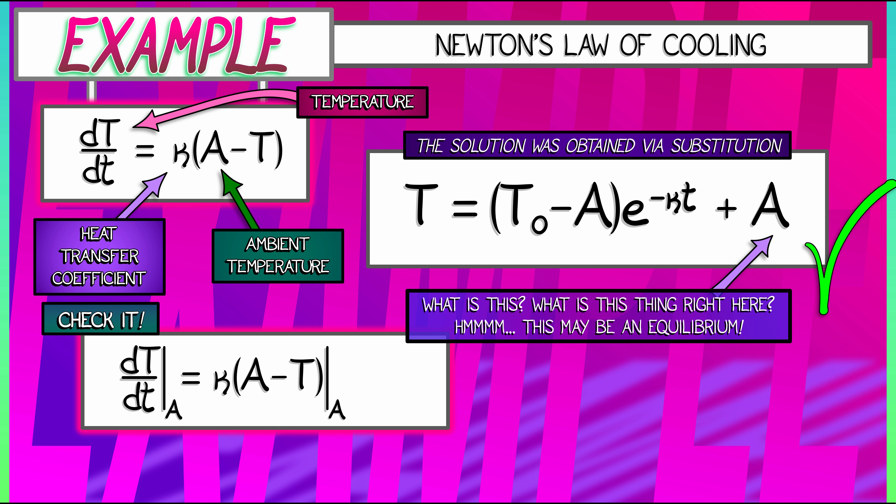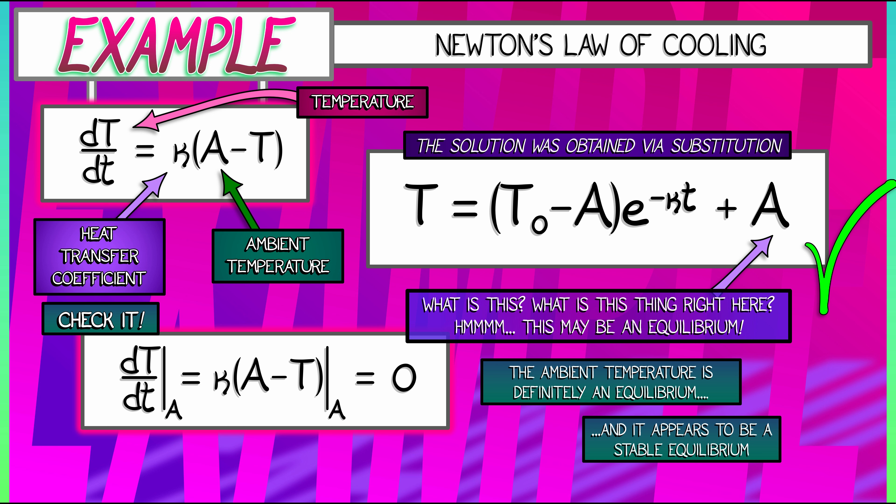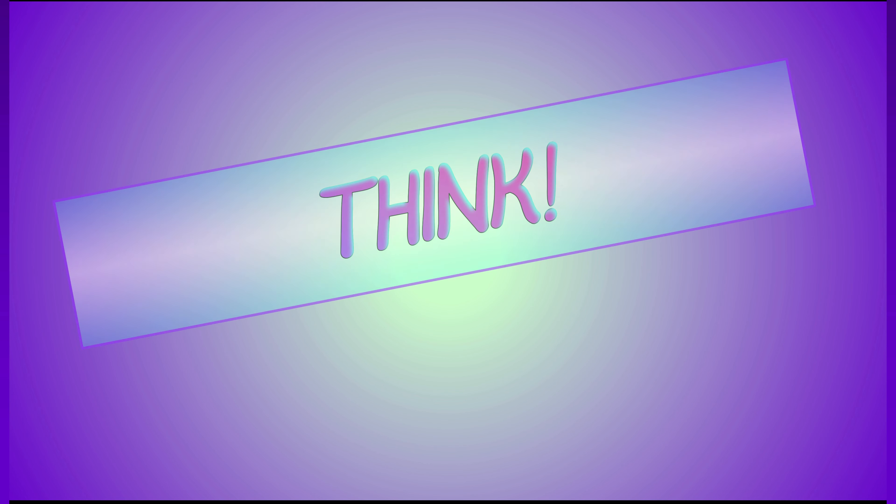That goes to zero. That means yes, it's a constant solution—it's not changing. It's an equilibrium, and it appears to be a stable equilibrium because if we take initial conditions close to A, we know the solution converges to A. Is that the only example? No, if you think about